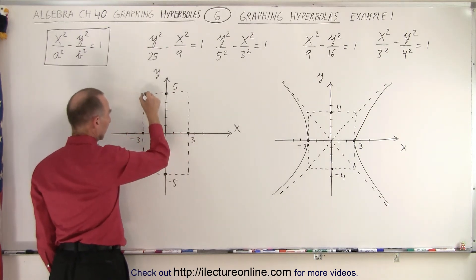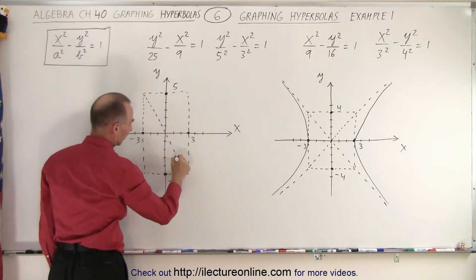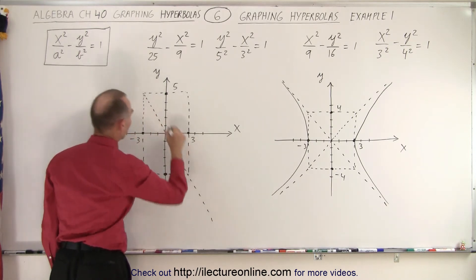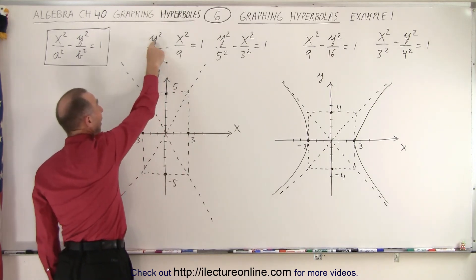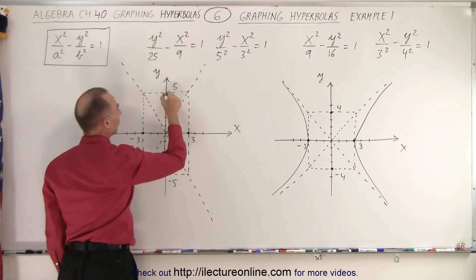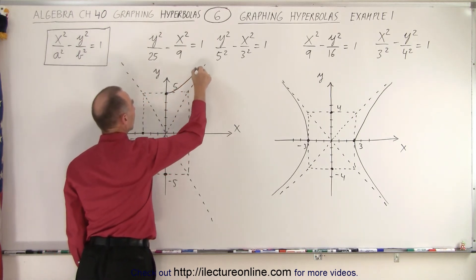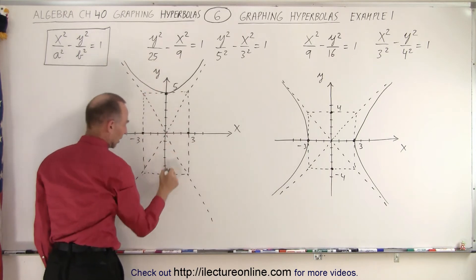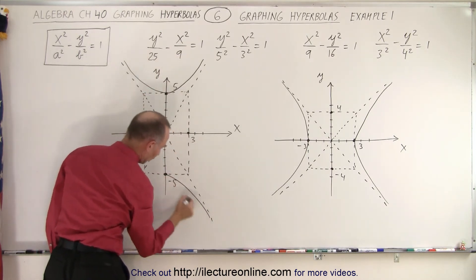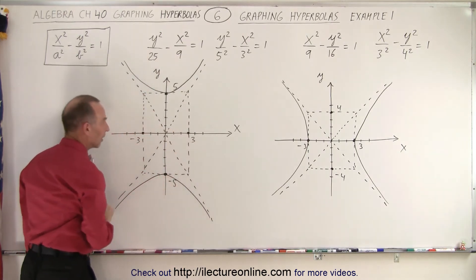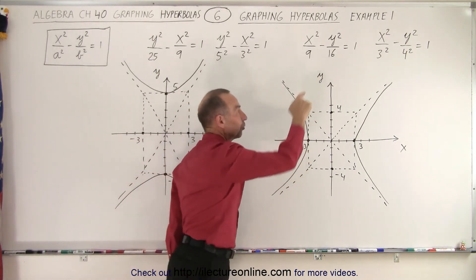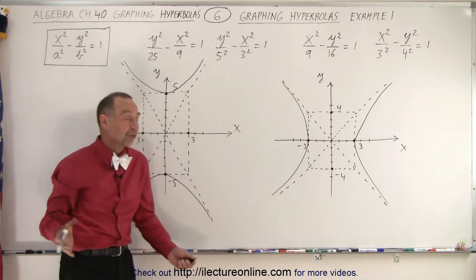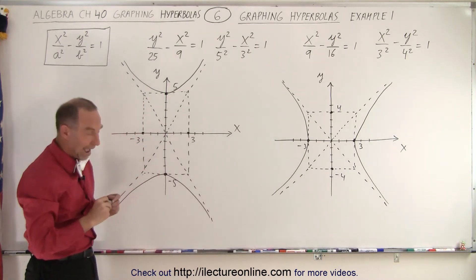Then we draw the diagonal lines. We extend it past the corners. And then we know that the hyperbola is going to go through these two points right here because we have the y squares being the positive term. So then the hyperbola will look like this. And we asymptotically reach those two lines. And there you go. That's the hyperbola associated with this equation and the hyperbola associated with that equation. And that's how we draw them when we have the center at the origin.